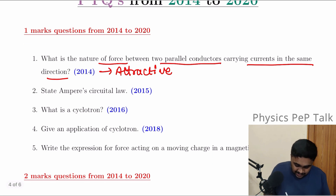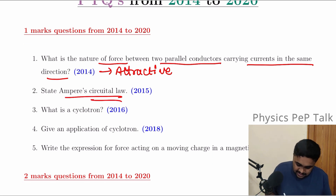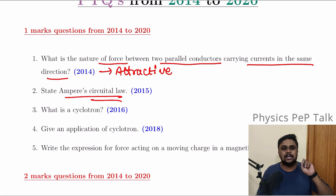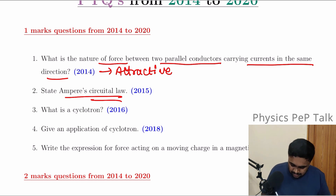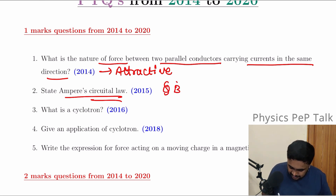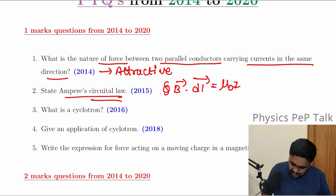State Ampere's circuit law. This is one mark. It is nothing but B dot dl is equal to mu naught times i.